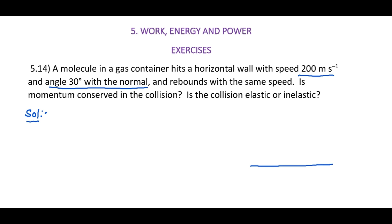The situation looks like this: there is a horizontal wall and a normal. The gas molecule hits the wall making an angle of 30 degrees with the normal and rebounds at the same angle. The initial velocity is 200 meters per second and the final velocity is also 200 meters per second.